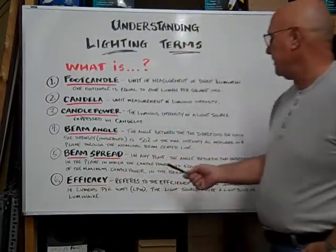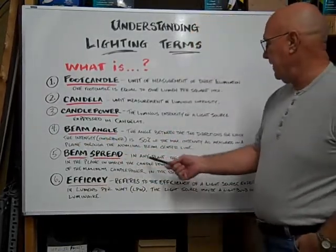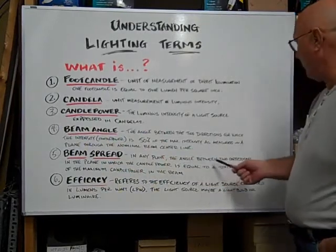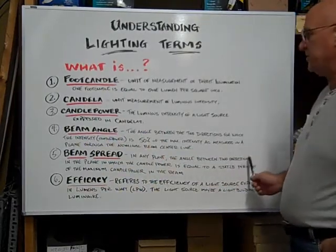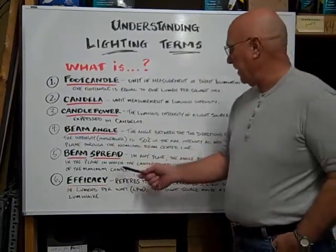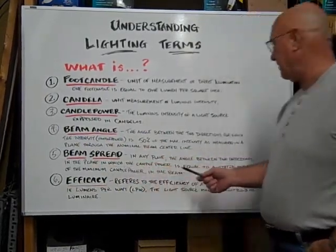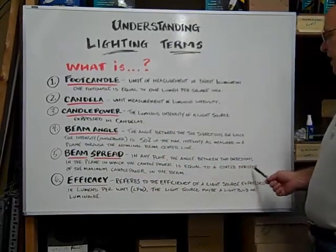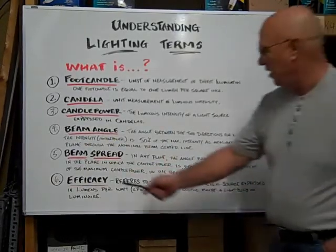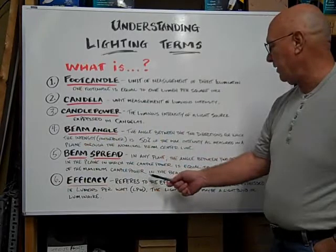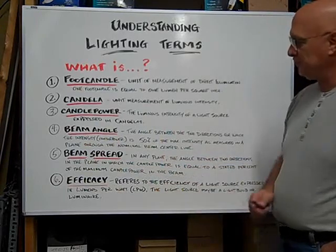Beam spread in any plane is the angle between two directions in the plane in which the candle power is equal to a stated percent of the maximum candle power in the beam.